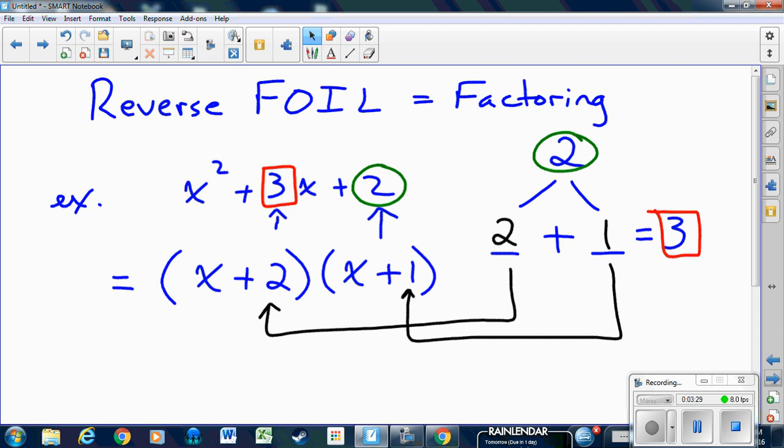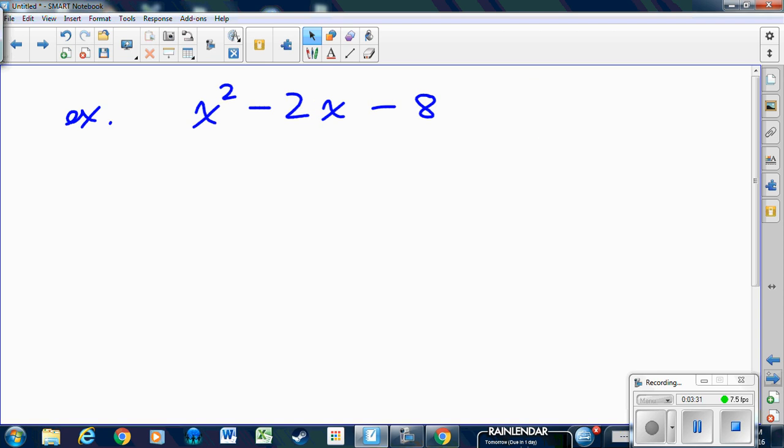Let's look at another example. Here we have x²-2x-8. At the top of my tree I would put the -8, and at the end of my tree I would put the -2. Now I have to go through all the factors of -8. There's a couple of things that can multiply to -8. Let's just deal with the 8 first and we'll deal with the negative at the end.